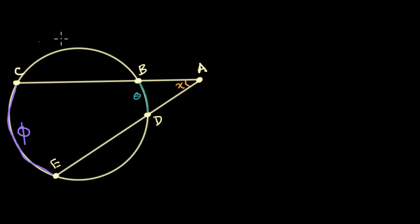And what we're going to prove is that X is going to be equal to one half the difference of those arc measures. So one half the difference, the way I've drawn it here, phi is larger, so I'll put phi minus theta. So let's get about proving that.